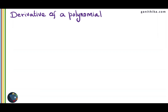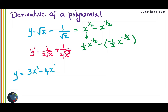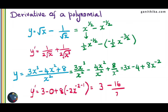Continuing with more examples for derivatives of polynomials: let y equal square root of x minus 1 over square root of x. Writing square root of x as x^(1/2) and 1 over square root of x as x^(-1/2), and applying the formula, we get the derivative. For a polynomial divided by x squared, we separate x squared for each term and simplify into a polynomial. Then differentiating each term: 3x becomes 3, the constant 4 becomes 0, and 8x^(-2) becomes negative 2x^(-3), giving the derivative as 3 minus 16 over x cubed.